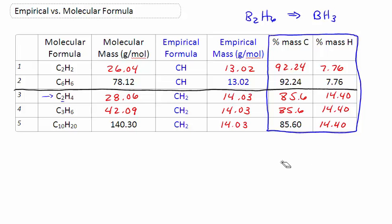So first off, the empirical mass is the same for everything with the same empirical formula. That should be pretty obvious. But check this out. We also see that the percent masses are the same for anything that has the same empirical formula.